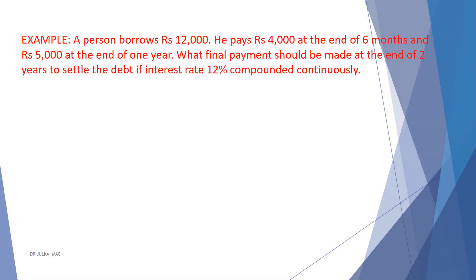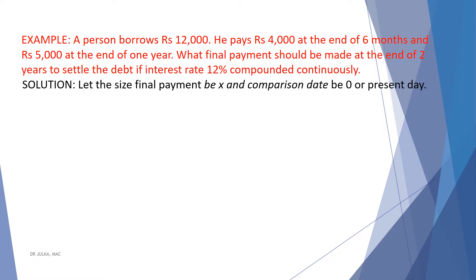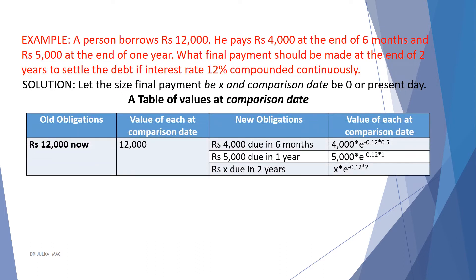Now one example where interest is compounded continuously. A person borrows Rs. 12,000. He pays Rs. 4,000 at the end of 6 months and Rs. 5,000 at the end of 1 year. What final payment should be made at the end of 2 years to settle the debt if the interest rate is 12% compounded continuously? We assume the final payment is Rs. x and the comparison date is 0, or the present date. The value of the old obligation of Rs. 12,000 at comparison date is Rs. 12,000. When interest is compounded continuously, the formula for present value is: amount multiplied by e raised to the power of minus r times t.